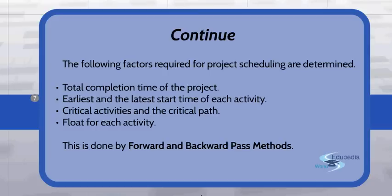Float, or free time, is the length of time in which a non-critical activity can be delayed or extended without delaying the total project completion time. Only non-critical activities have time gaps between them; critical activities have no time gap and cannot be delayed at all. All of these factors are determined using the forward and backward pass methods. In the subsequent sessions we will see how to use these to calculate the total completion time, the earliest and latest start times of each activity, the critical activities and critical path, and also how to calculate the float.